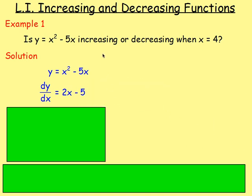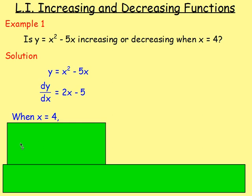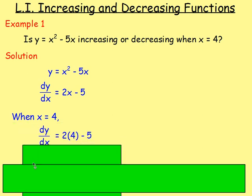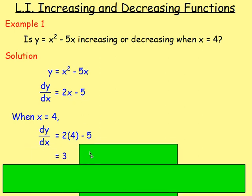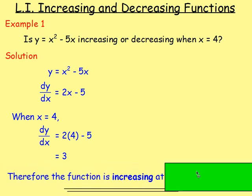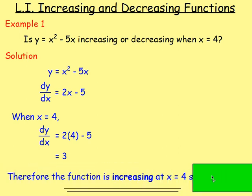That's the derivative. But how do we know if it's increasing or decreasing when x is 4? We substitute it in. When x equals 4, dy/dx equals 2 times 4 minus 5, which gives 8 minus 5, which is 3. Because we get a positive number — and remember dy/dx is really your gradient — the function is increasing at x equals 4, since the derivative dy/dx is bigger than 0.